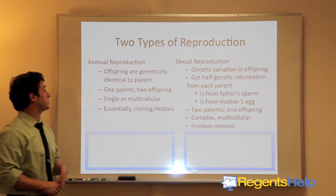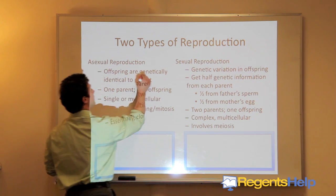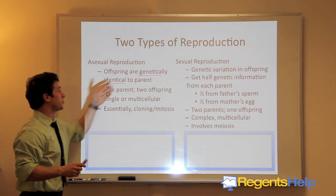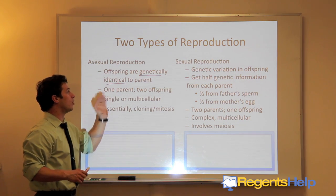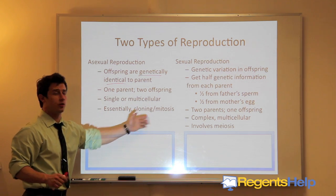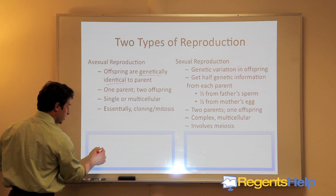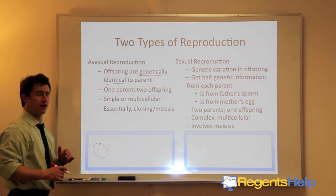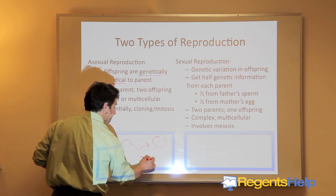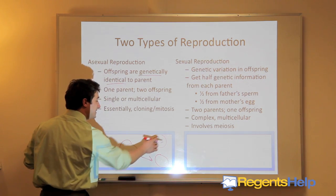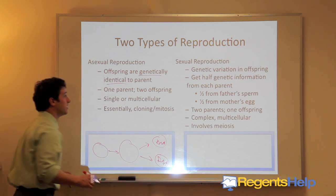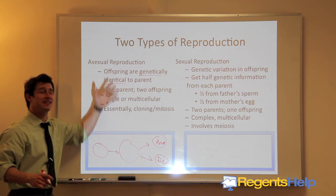There are two types of reproduction. There's asexual reproduction, and the key here is genetically identical offspring to the parent. We're going to have one parent, two offspring, and it can be single or multi-cellular — essentially it's cloning. The cell will grow and then split into two identical forms with the same DNA.